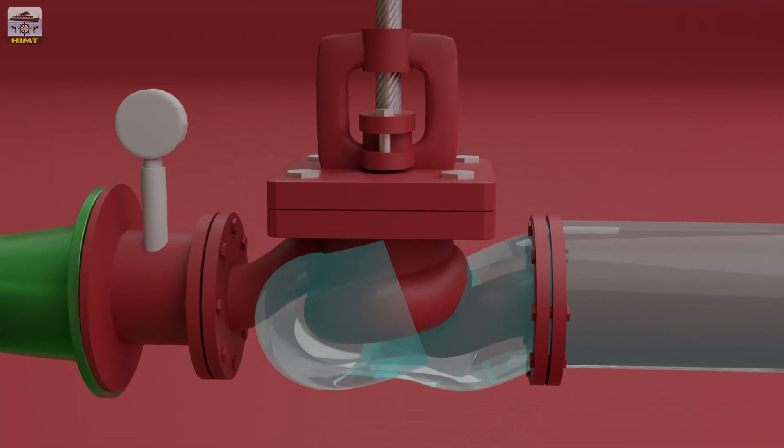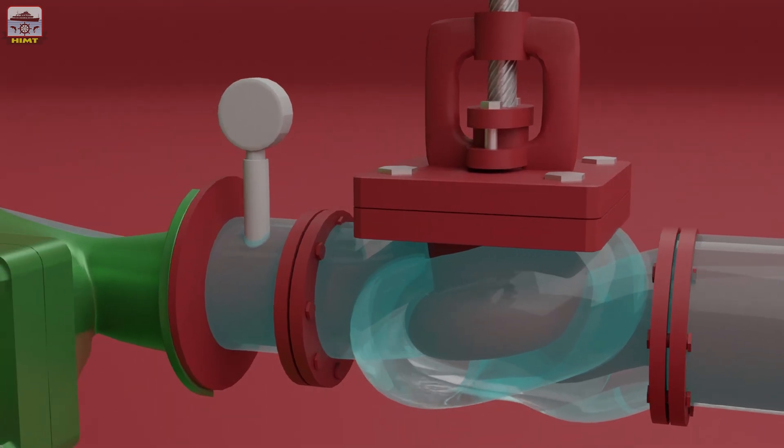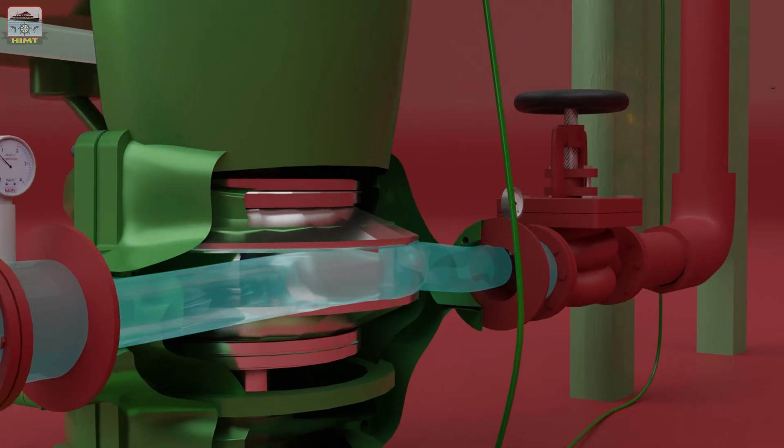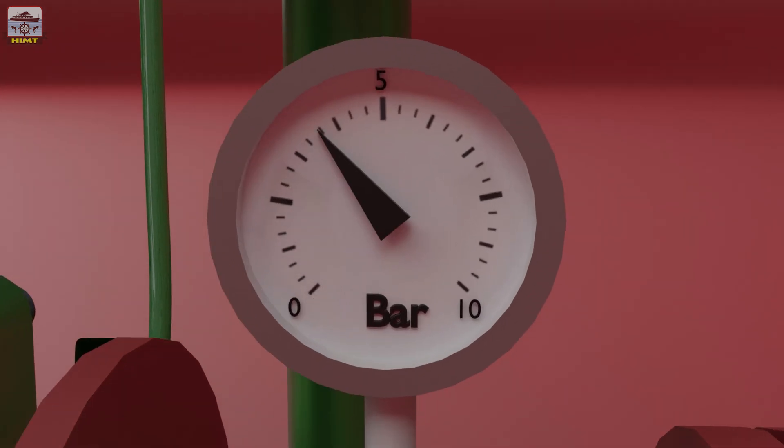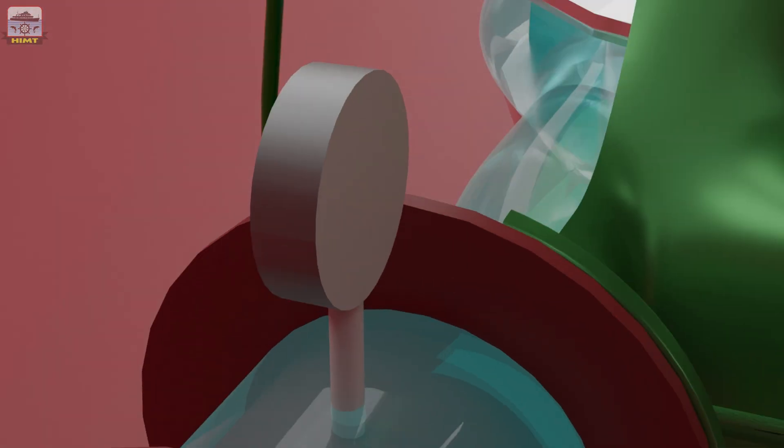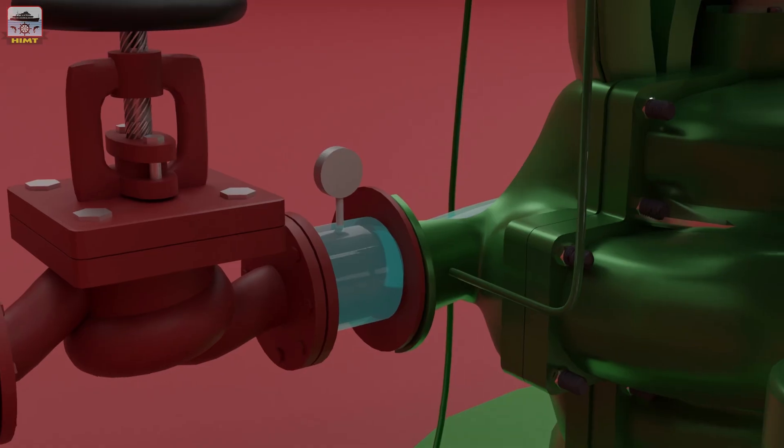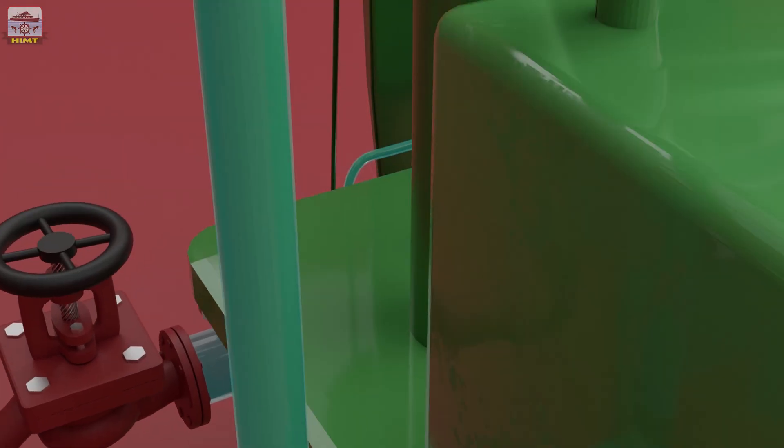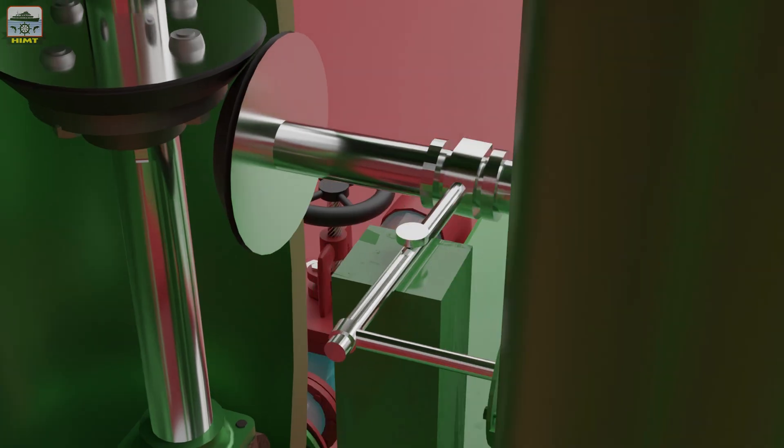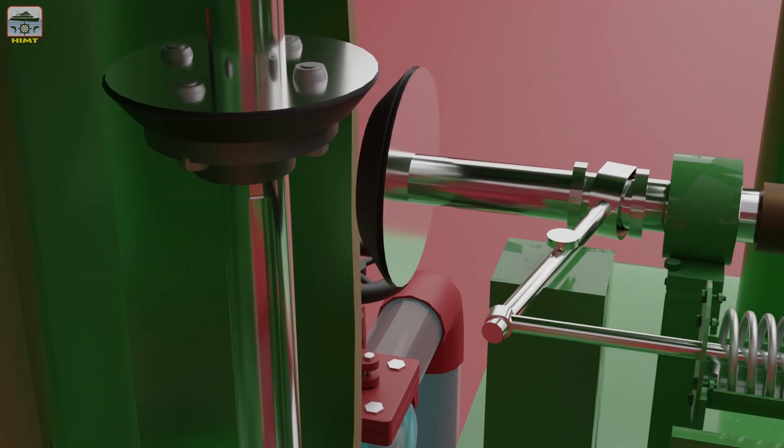Water rises up in the suction pipe and fills up the main pump casing. Once the casing is filled with water, the pump develops pressure, and this pressure acts on the auto cylinder which disengages the primer pump from the main pump.